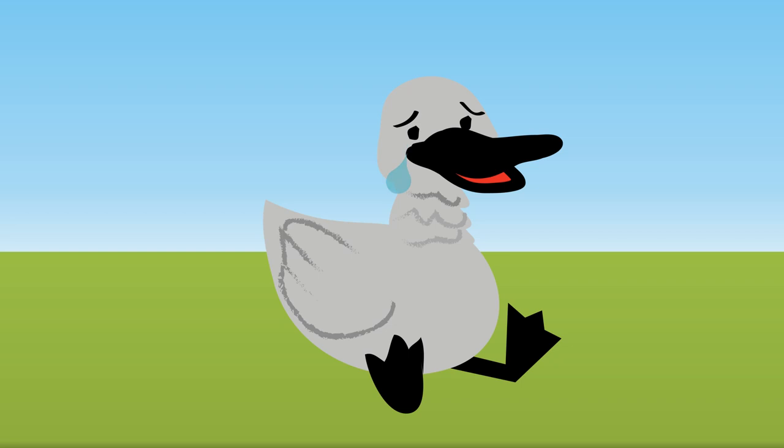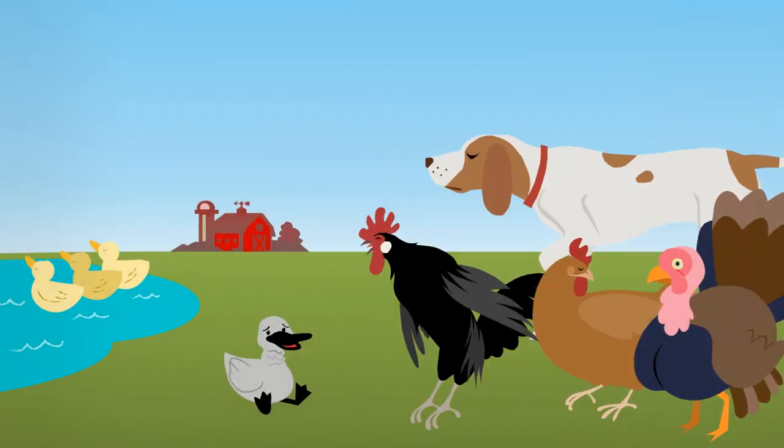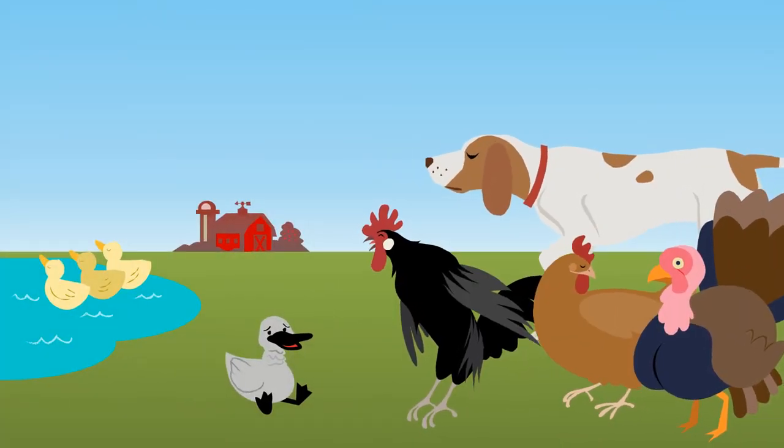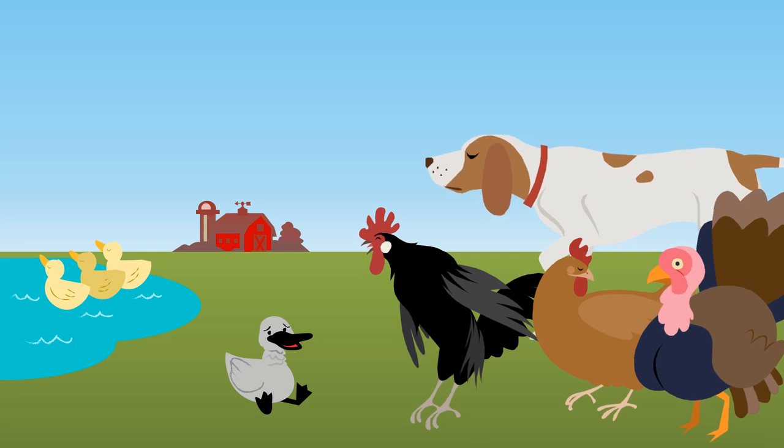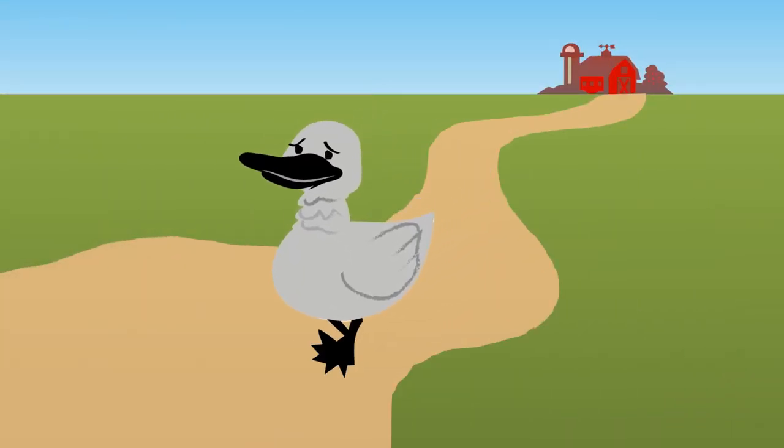The Ugly Duckling was very sad. Everyone made fun of him because he did not look like his brothers and sisters. So he ran away from home.